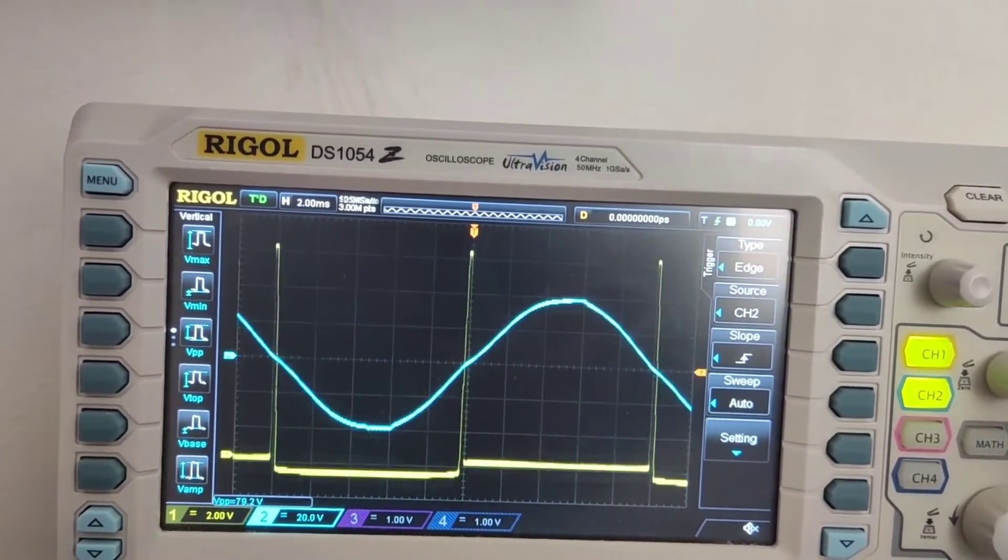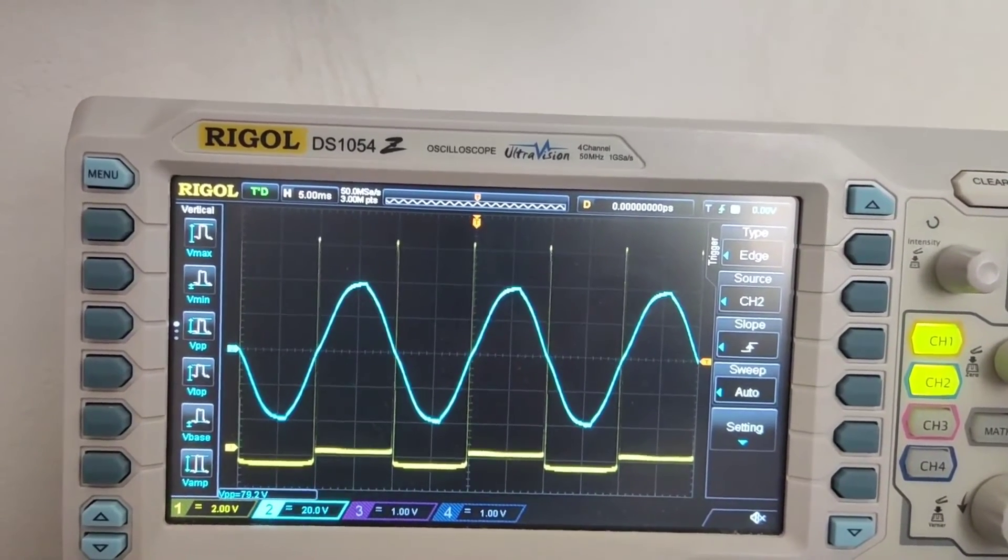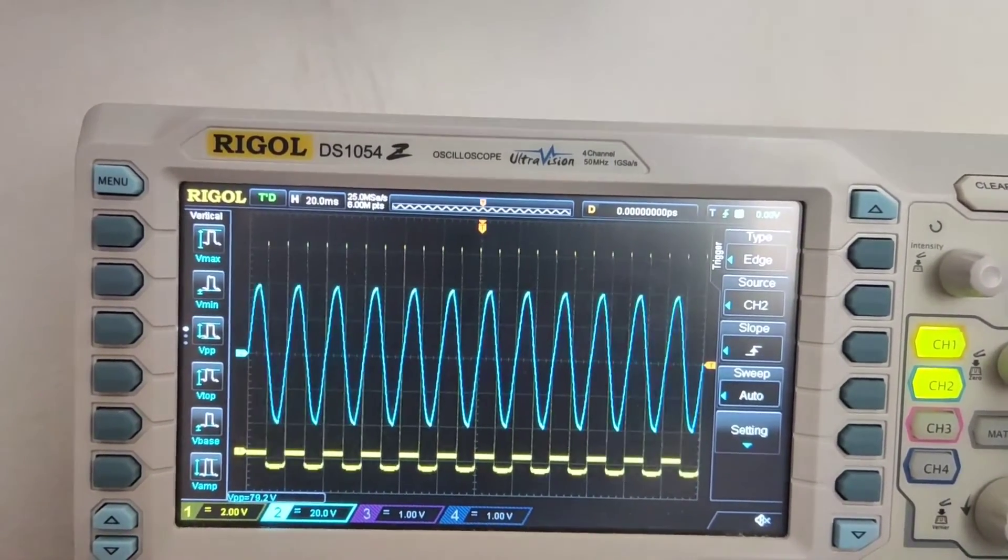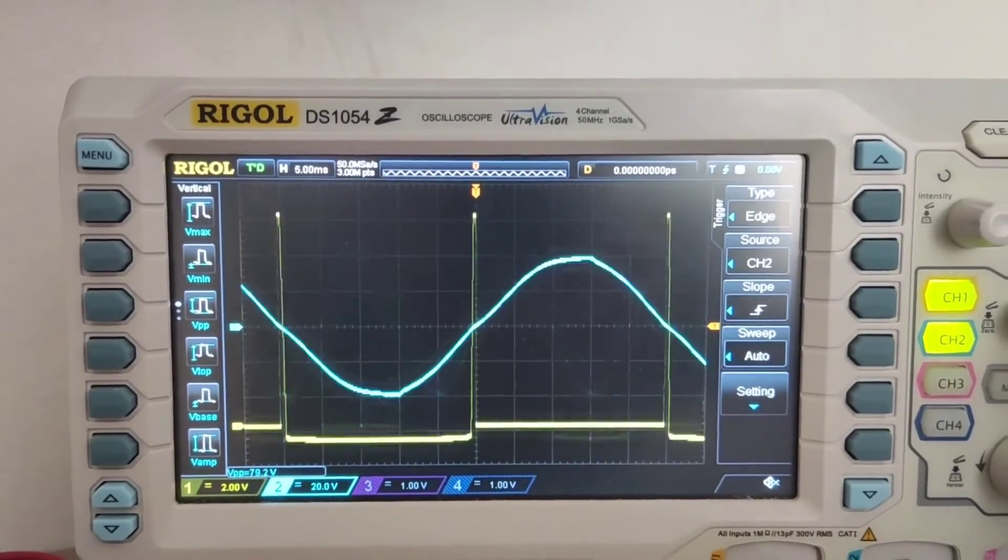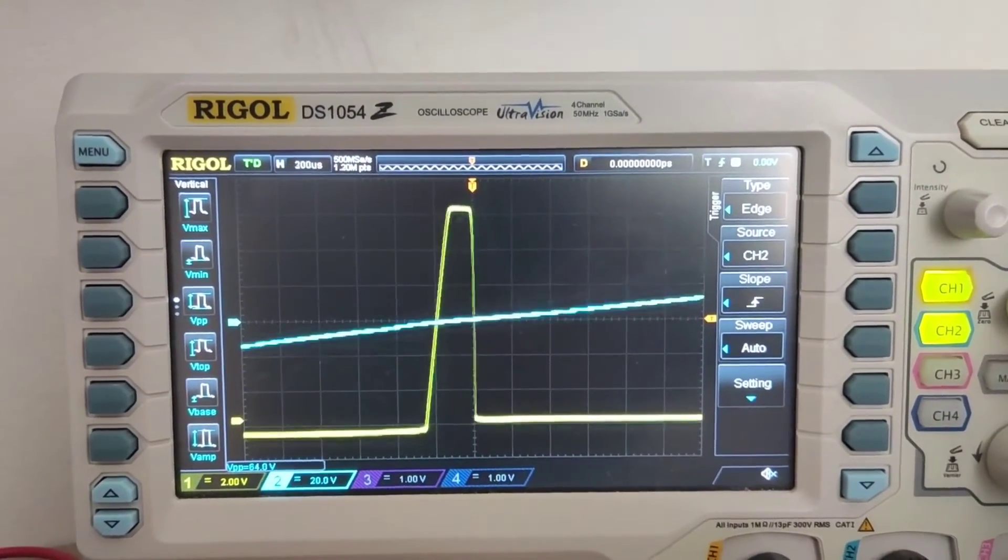This pulse can be used for different applications. For example, to synchronize the turning on of a triac or the switching of a relay. So in this way, you minimize the switching losses and do not create dangerous arcs.